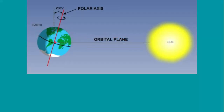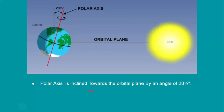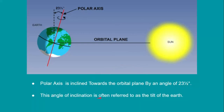You can see very clearly this is the orbital plane, and this is the polar axis, which is not perpendicular — it is tilted by a degree of 23 and a half degrees. So the polar axis is inclined towards the orbital plane by an angle of 23.5°. This angle of inclination is often referred to as the tilt of the earth. We can conclude that our earth is tilted by 23.5°.